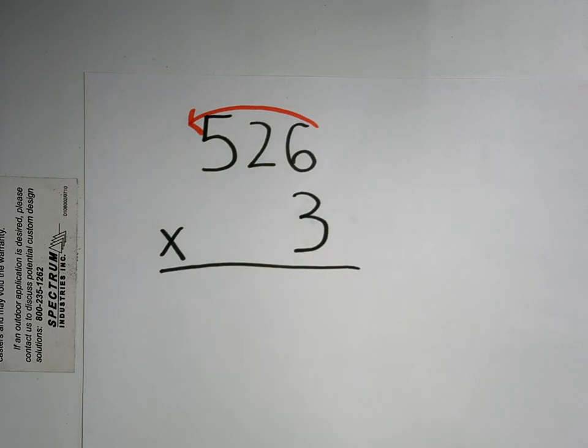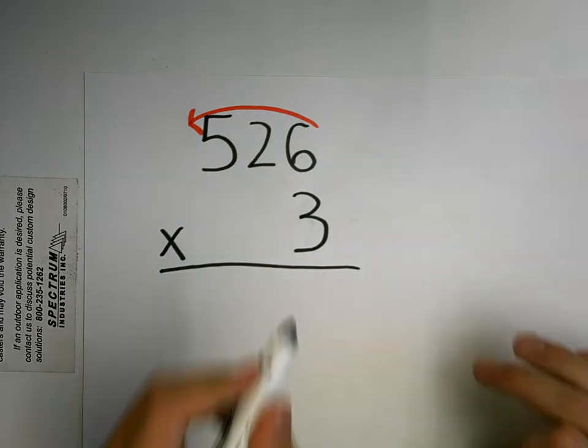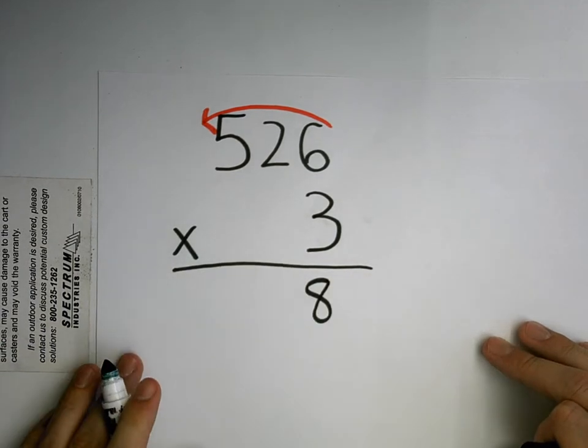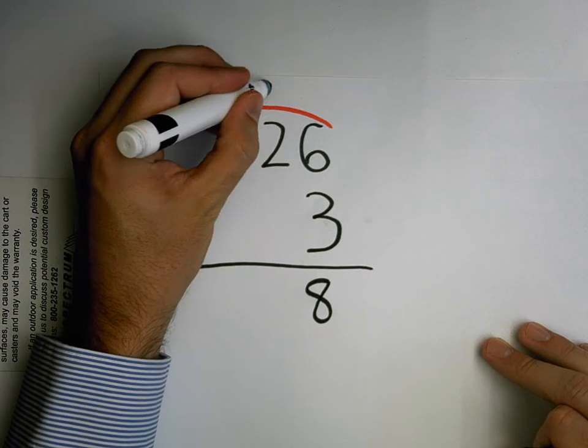6 times 3. Charles, 18. So I'm going to put my 8 down here. Where is my 1 going to go, Charles? Above the 2 in my tens place.